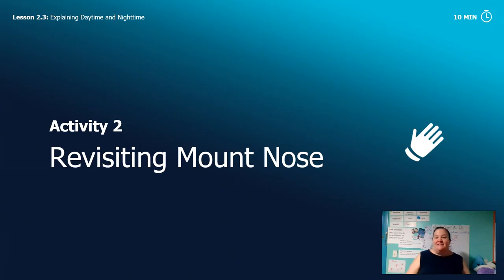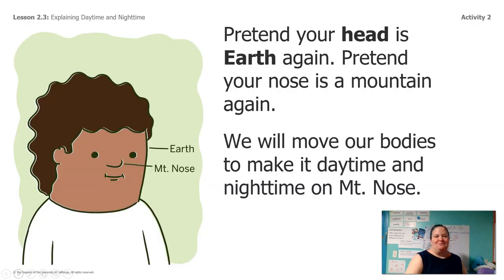We learned that it's daytime for people in places on Earth that are facing the sun, and it's nighttime for people that are not facing the sun. Let's do the same thing with our daytime and nighttime chart and look again at Mount Nose. We're going to pretend our head is the Earth and our nose is a mountain. Now that we're back out in space, let's do our Mount Nose role play. We're going to imagine that there's a person on top of our nose and our nose is a mountain on Earth. So our head is going to be the Earth.